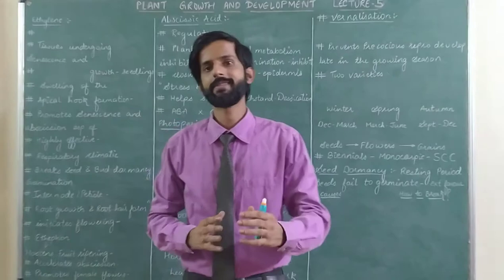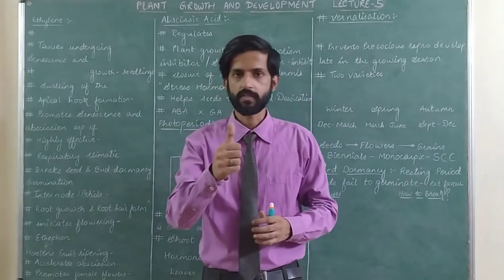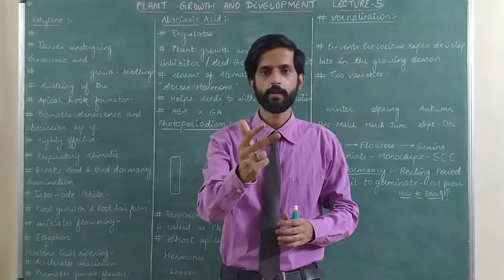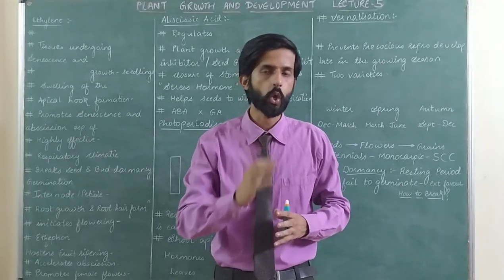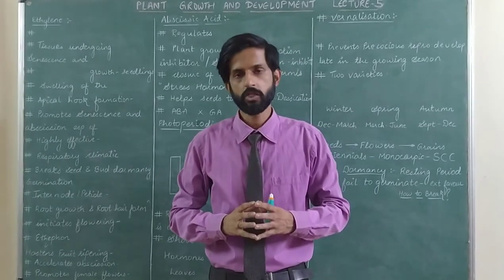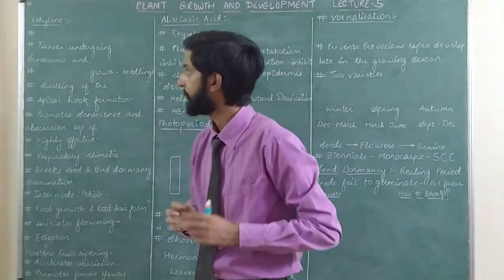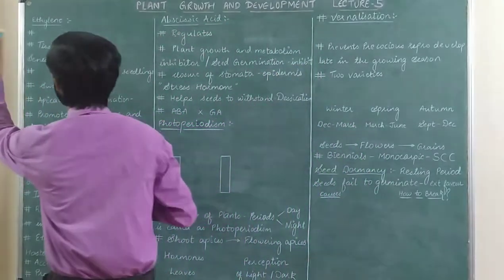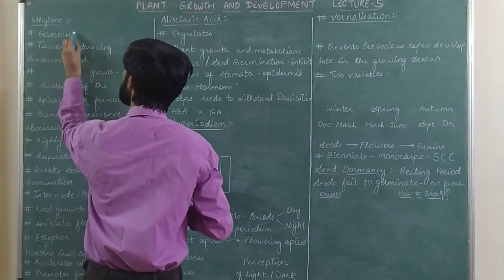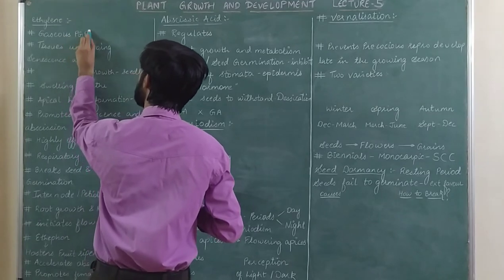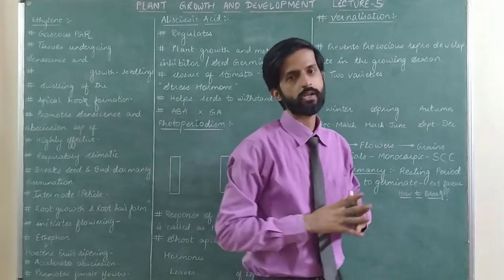We have studied 3 plant growth hormones in our previous video: Auxins, Gibberellins, and Cytokinin. In today's lecture, we will study 2 plant growth regulators — Ethylene and Abscisic Acid. Point number 1 to remember: Ethylene is the only gaseous PGR — the only gaseous plant growth regulator.